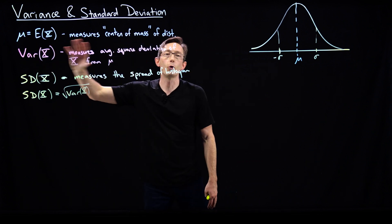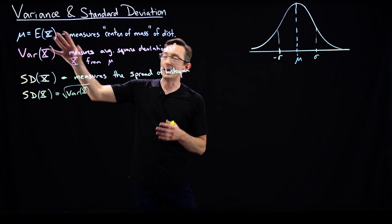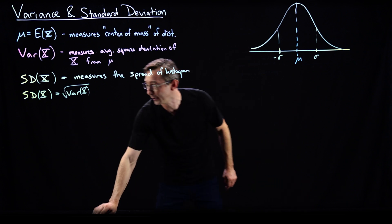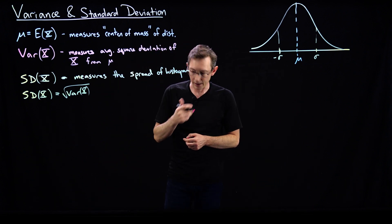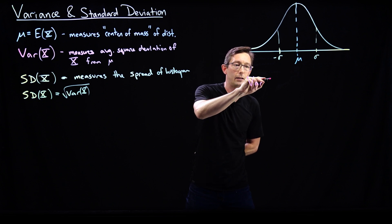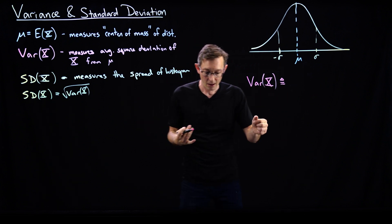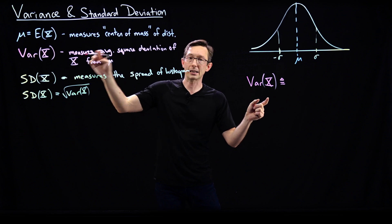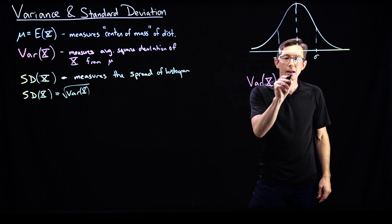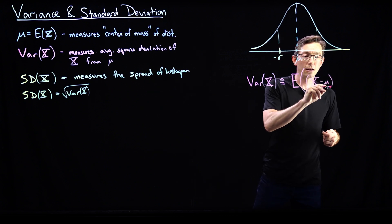So I'm going to write down the formula for the variance, show how it works and how to compute it. The variance of x is defined as the expected squared deviation of x from mu. In math: it's the expectation of the quantity (x minus the mean) squared.